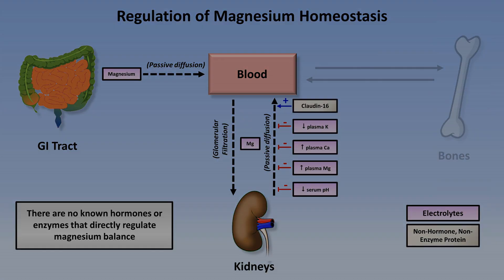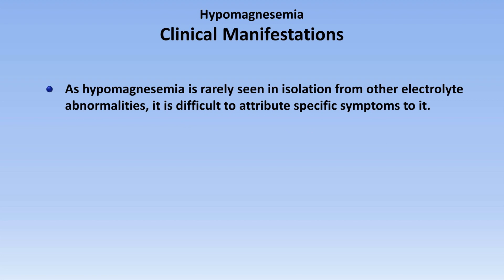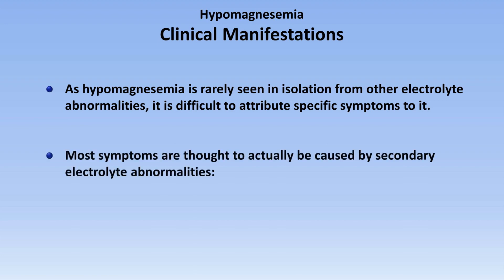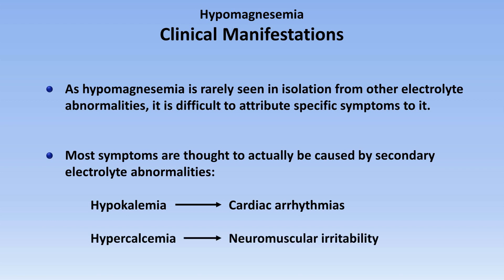This is a good time to transition to hypomagnesemia. As hypomagnesemia is rarely seen in isolation from other electrolyte abnormalities, it's difficult to attribute specific symptoms to it. Most symptoms are thought to actually be caused by secondary abnormalities that are frequently associated with or even caused by hypomagnesemia. For example, concurrent hypokalemia can lead to cardiac arrhythmias, while concurrent hypercalcemia can lead to neuromuscular irritability, which can manifest as tremors, fasciculations, and tetany.